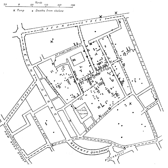Geographic information systems provide a large domain of capabilities designed to capture, store, manipulate, analyze, manage, and present all types of geographical data. They utilize geospatial analysis in a variety of contexts, operations and applications.